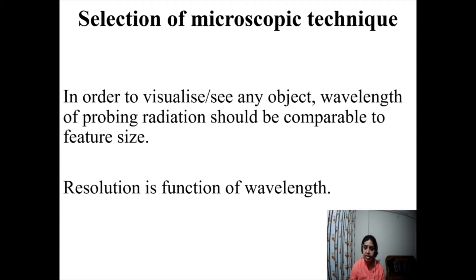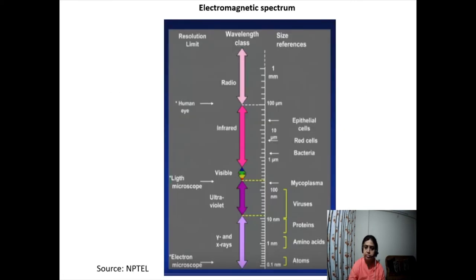In general, for both optical and electron microscopes, resolution is a function of wavelength. This is a typical electromagnetic spectrum showing the ranges of different objects. The human eye can see up to about 150 microns — about the diameter of a human hair. Beyond that, we need a light microscope, which can go up to 400–500 nanometers. But beyond that, the light microscope cannot assist us, so we have to go for the electron microscope.